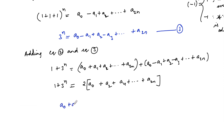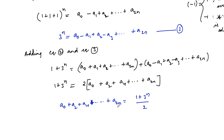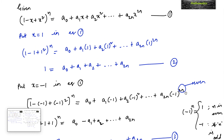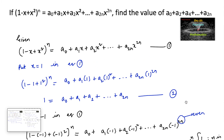Therefore, a₀ + a₂ + a₄ + ... + a₂ₙ = (1 + 3ⁿ) / 2. So the answer is (3ⁿ + 1) / 2.